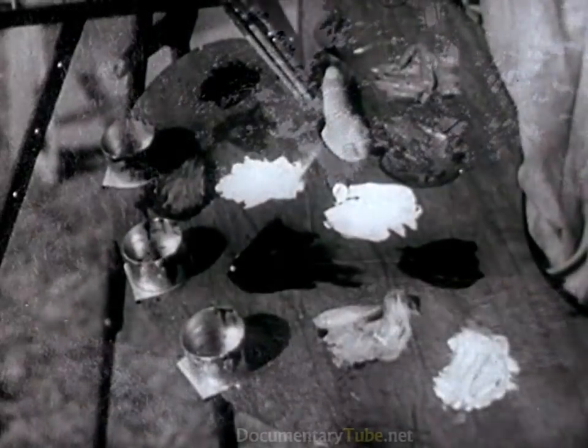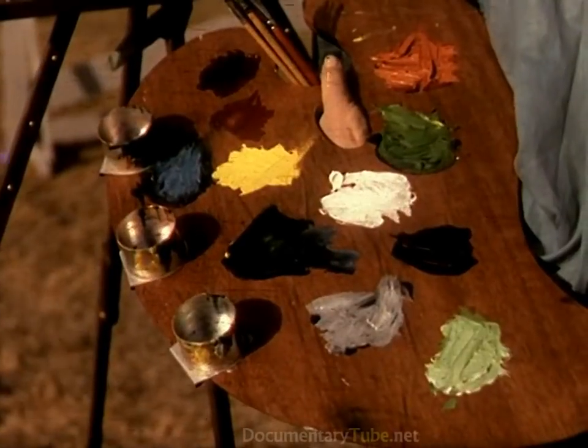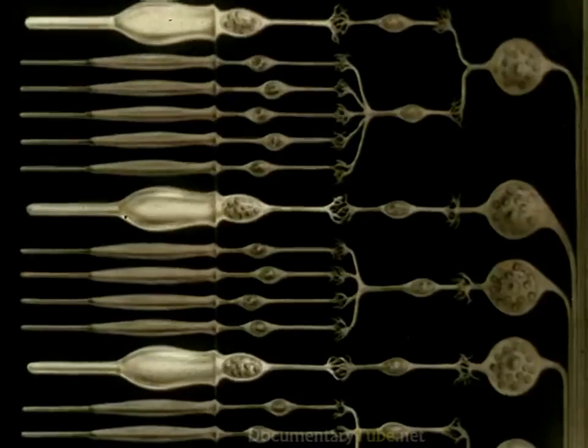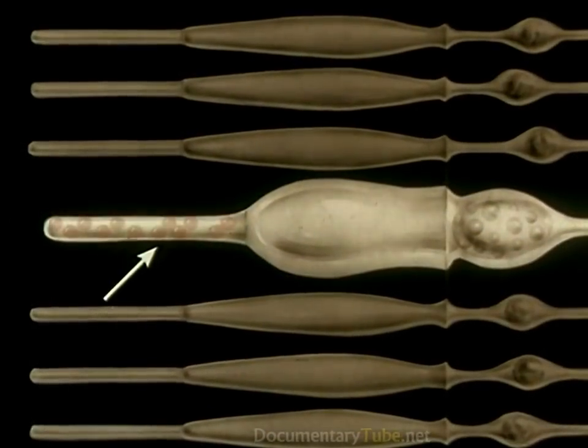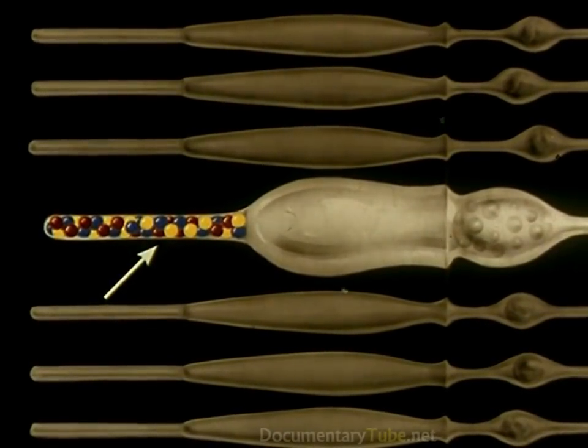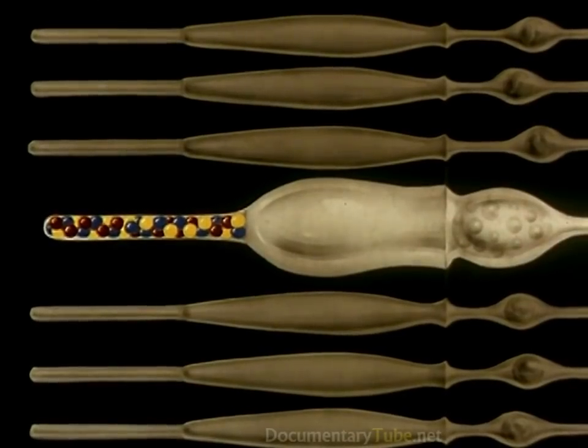But the cones, the organs of sharp, bright light vision, do more. They give us the fascinating world of color. In each cone are three chemical substances. Each substance is sensitive only to a particular group of colors.